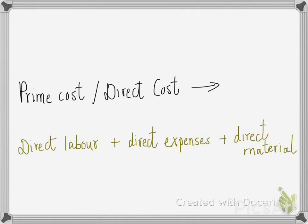There is something called prime cost, or direct cost. With the term 'direct cost' itself, you can understand that the cost is directly linked with the product. What comes under prime cost or direct cost is: direct labor plus direct expenses plus direct material equals direct cost or prime cost.